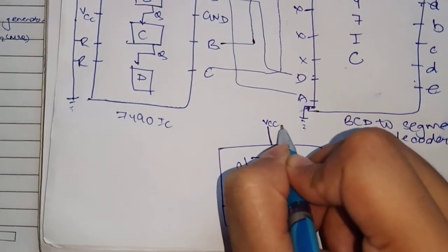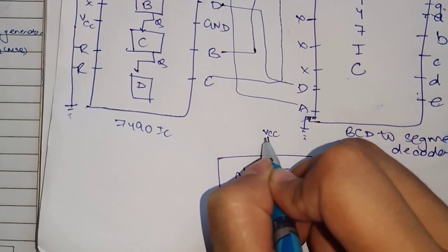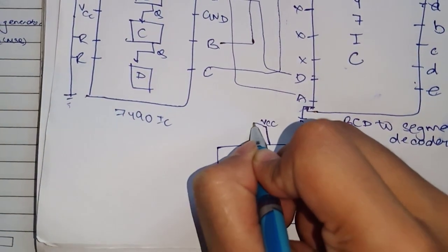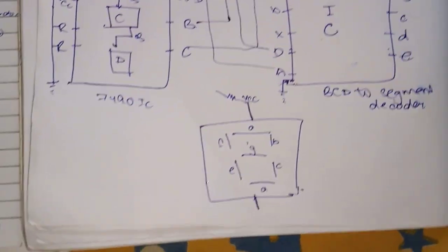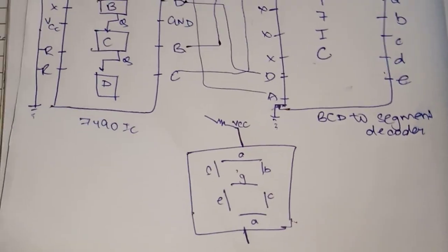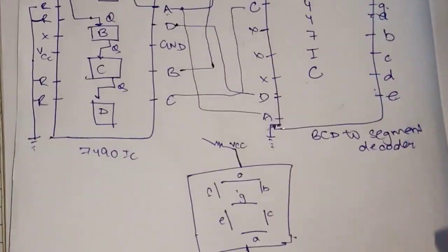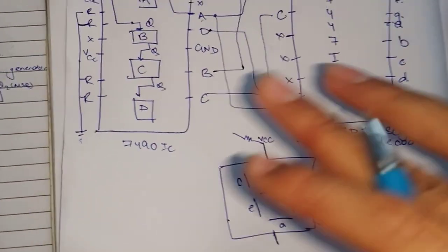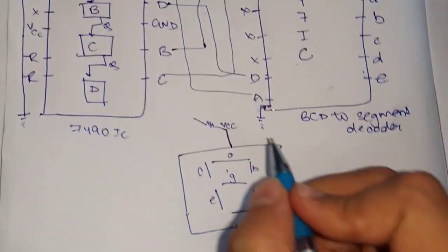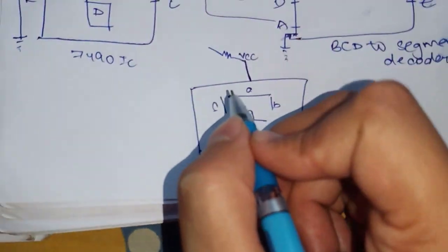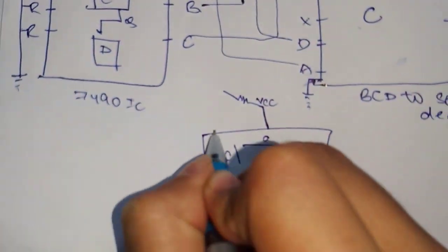You need to connect this to VCC and one resistance also. It would be given in the circuit only. I don't have the circuit diagram right now or else I would have shown you, but understand the theory particularly.